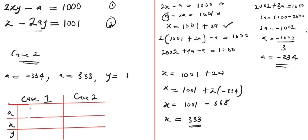Here are the two integer solutions. Case 1: a equals negative 1000, x equals 1001, y equals 0. Case 2: a equals negative 334, x equals 333, y equals 1. These are the integer solutions for the question. Please don't forget to subscribe. Thank you and goodbye.